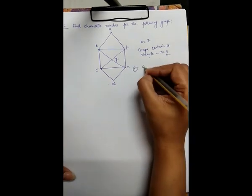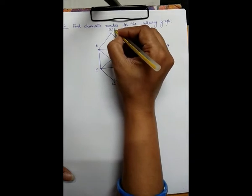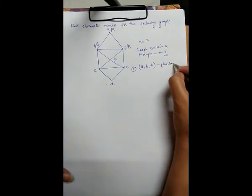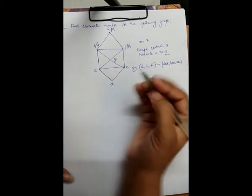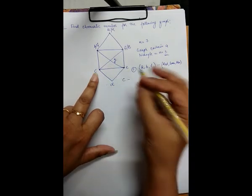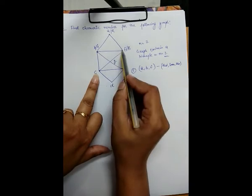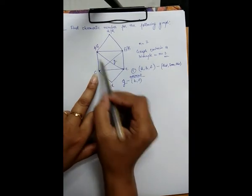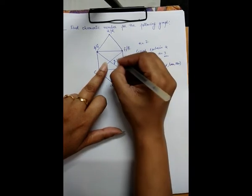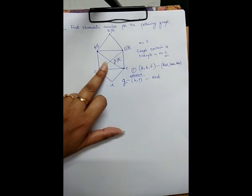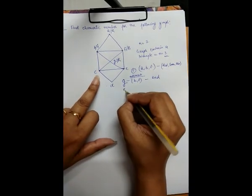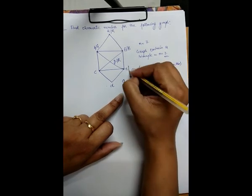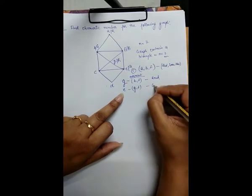We start with the triangle A, B, and F, and paint it with red, green, and blue — A with red, B with green, and F with blue. Next, consider vertex G: G is adjacent to B and F, so I cannot use green or blue, but I can use red. So I paint G with red — still 3 minimum colors. Next, consider E: E is adjacent to G and F, so I cannot use red or blue, but I can use green. So E is painted green.